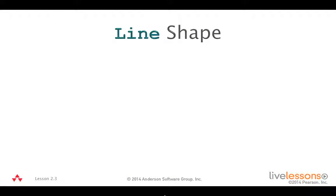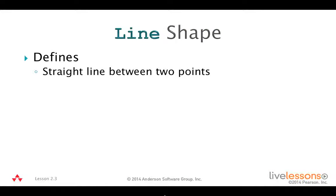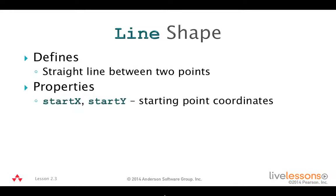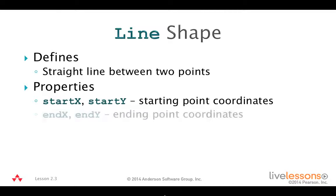Let's begin with the line shape. The line shape lets you draw a straight line between two points. Its properties are Start X and Start Y for the starting point coordinates of the line segment, and End X and End Y for the ending point coordinates.